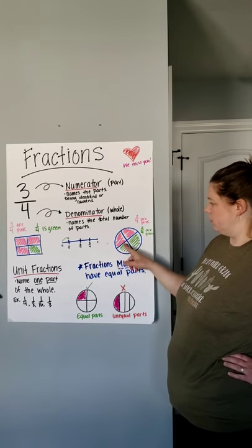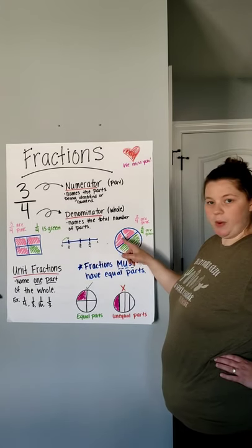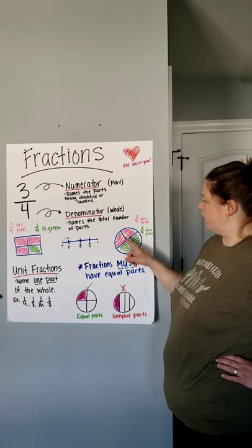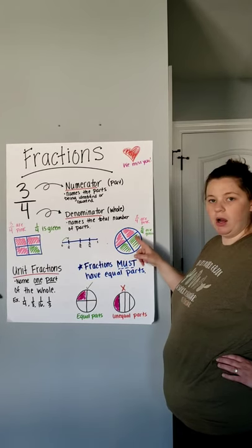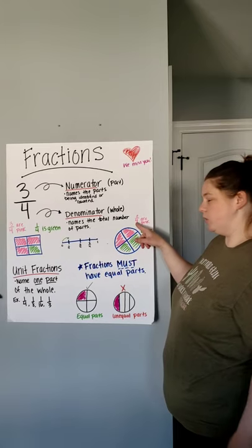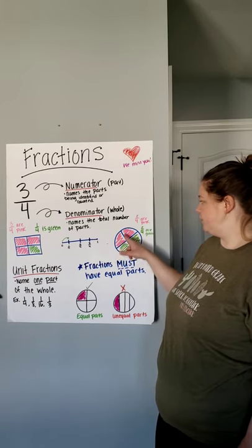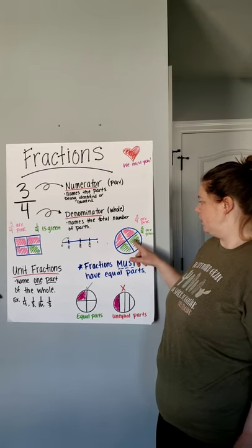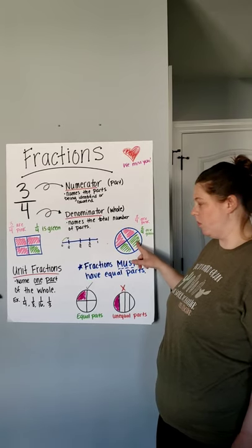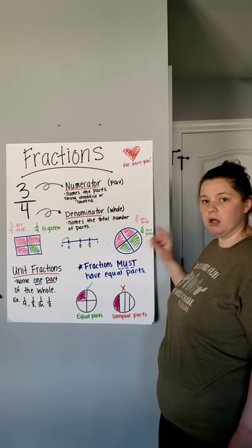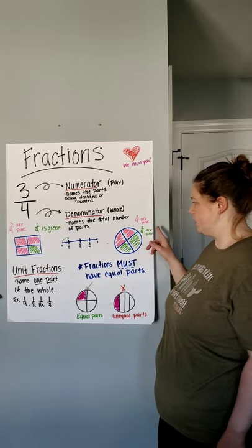Over here on the circle, we have two parts that are shaded pink. So, we put a two on top, and there are one, two, three, four parts of the whole. So, a four goes on the bottom. So, two-fourths are pink. And if two-fourths are pink, then we have how many greens? One, two greens out of the same four total. So, two-fourths are green.